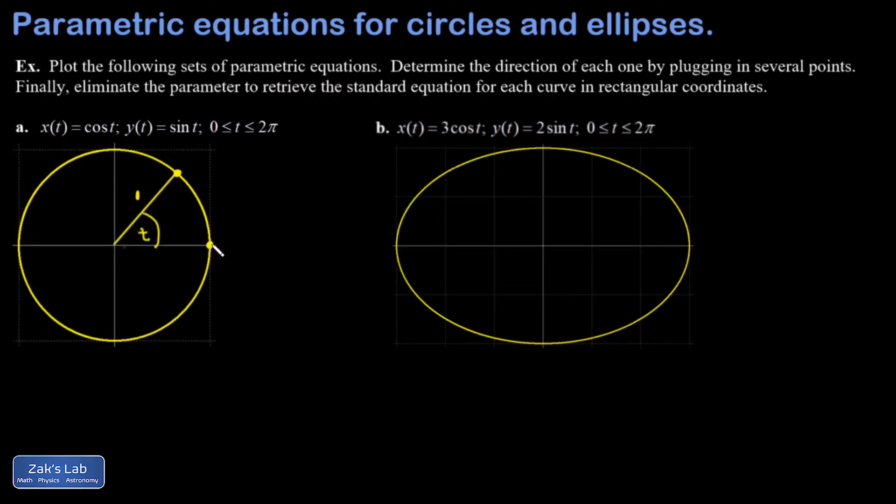So I'm going to start at t equals zero. If I show the algebra explicitly down here, x of zero is cosine of zero which is one, and y of zero is sine of zero which is zero, and I get the point one zero corresponding to t equals zero.